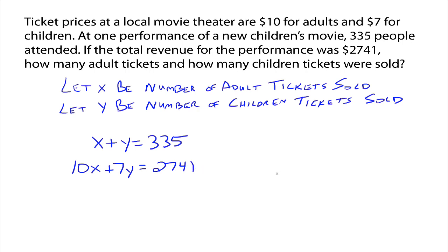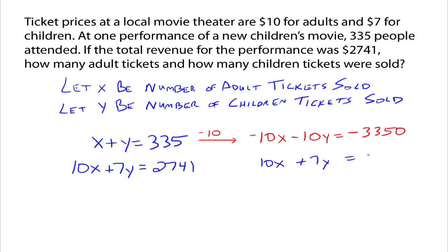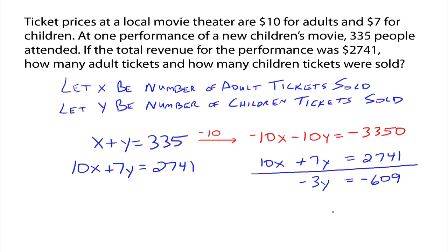That's your system of equations, which we can solve using the elimination method. I'm going to multiply the top equation by negative 10, giving me negative 10X minus 10Y equals negative 3,350. I'll leave the bottom equation alone: 10X plus 7Y equals 2,741. Then add them up — the X's go away — and this gives us negative 3Y equals negative 609, so Y equals 203.